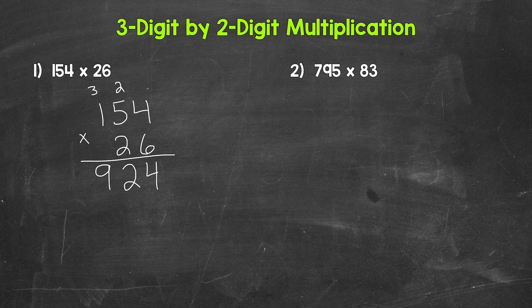Now we are done with this six, done with this two, and done with this three. I like crossing numbers off when we are done with them — that way we don't confuse them with any other numbers later in the problem as we're working through. It helps us stay organized.